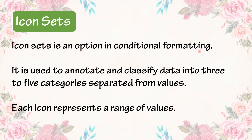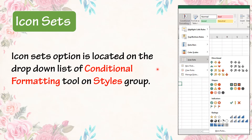Icon Sets is an option in Conditional Formatting. It is used to annotate and classify data into three to five categories separated by values. Each icon represents a range of values. The Icon Sets option is located on the drop-down list of the Conditional Formatting tool on the Styles group.